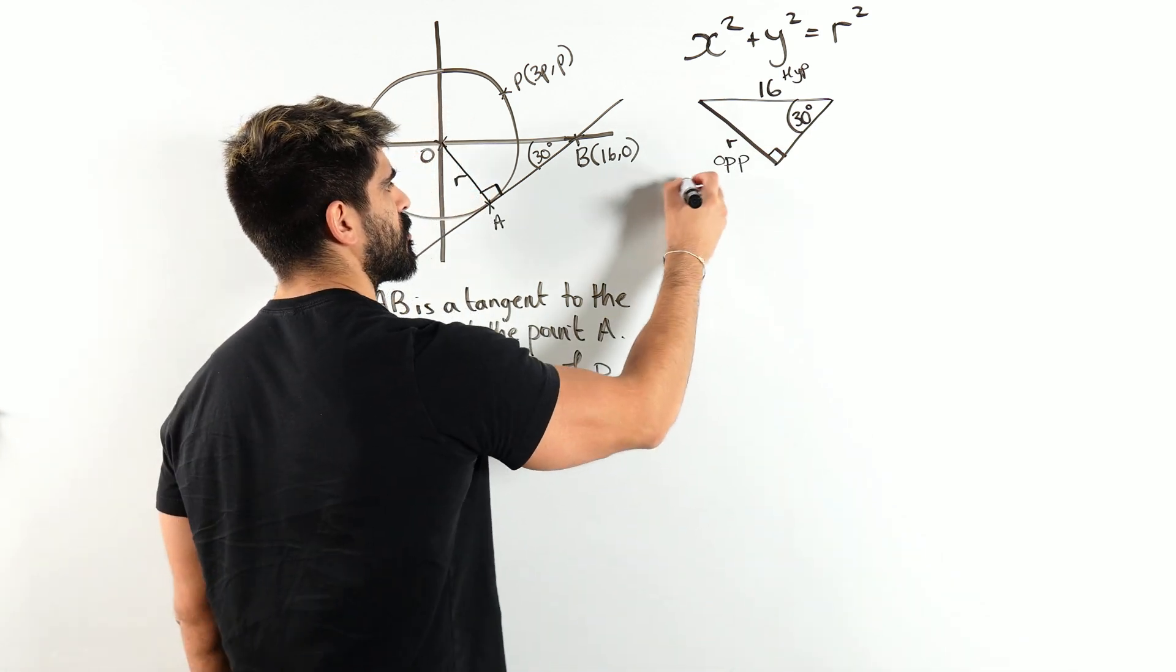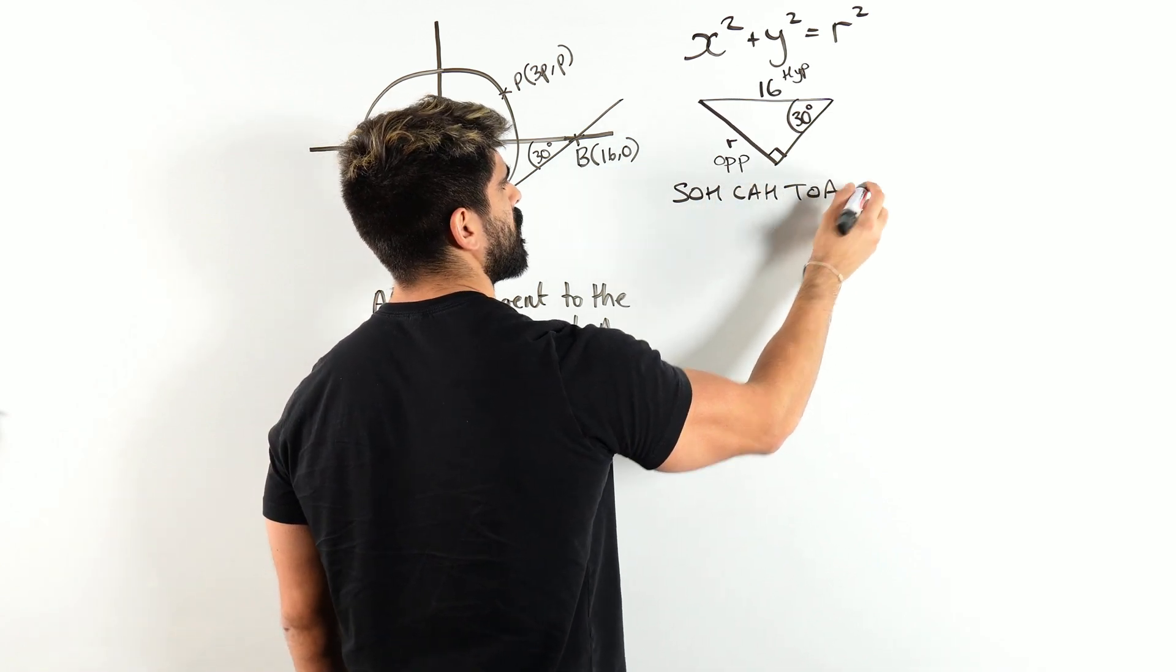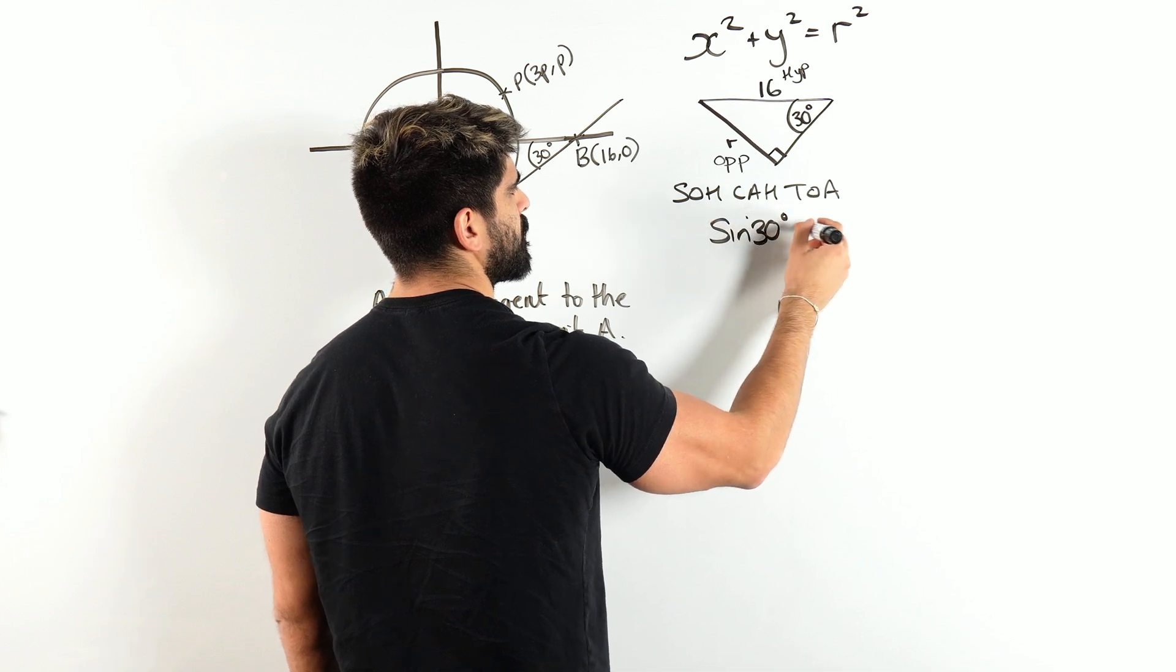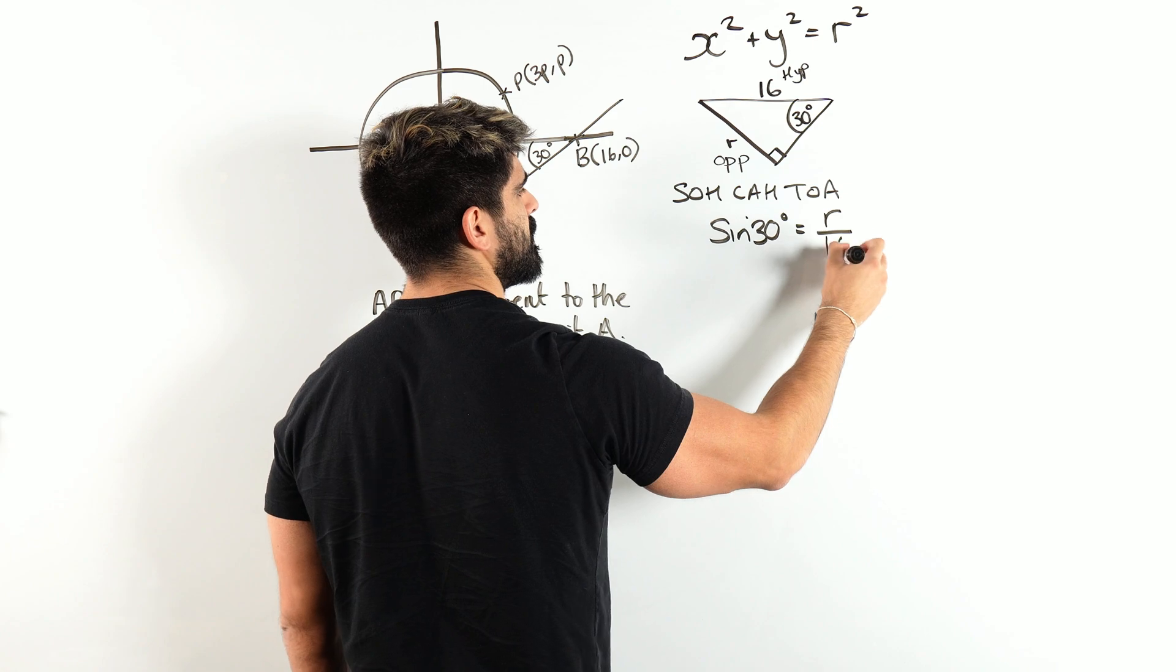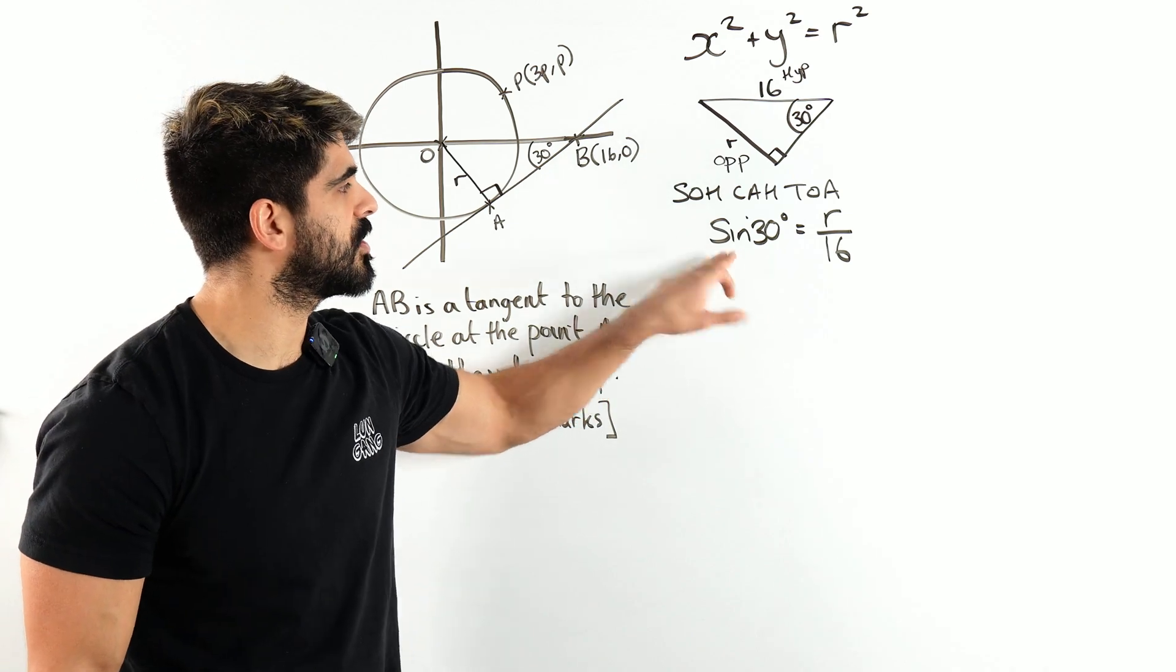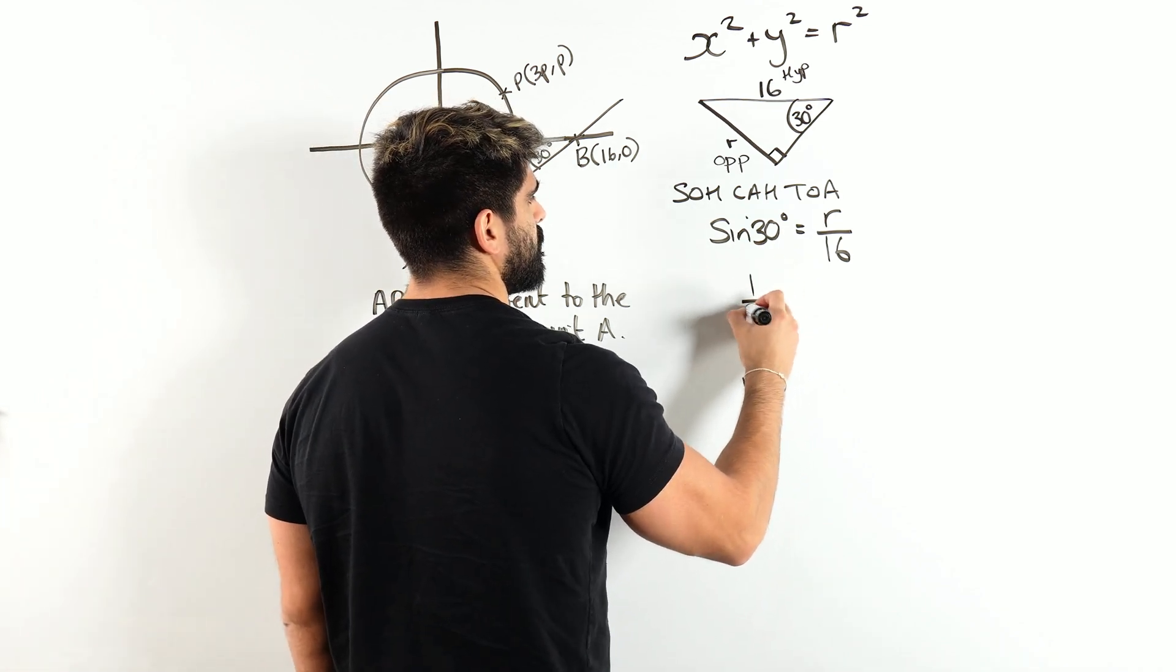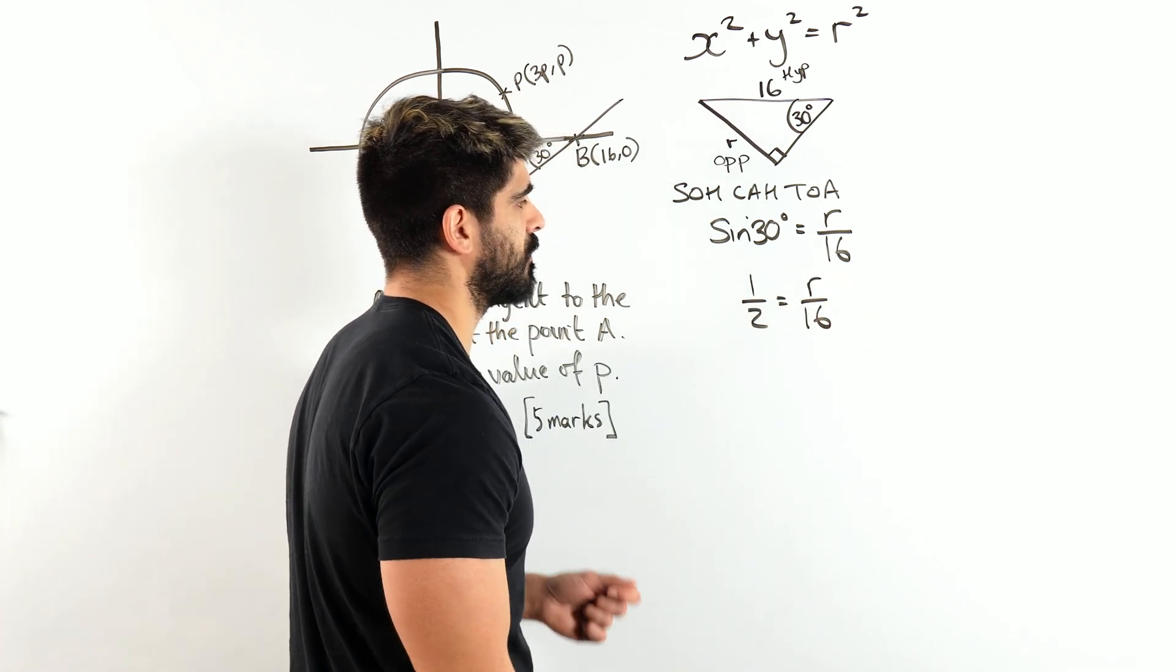So we can use SOH CAH TOA to work out what R is now. R is opposite 30, 16 is the hypotenuse. Thinking about SOH CAH TOA, which one involves O and H? It's sine. Sine of 30 degrees is the opposite R divided by the hypotenuse 16. And this is where we're going to get another mark in a non-calculator paper. We need to know sine of 30 is 1 half.